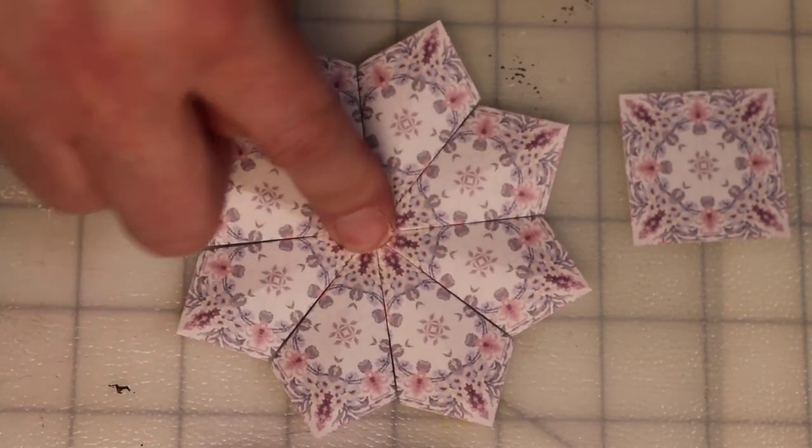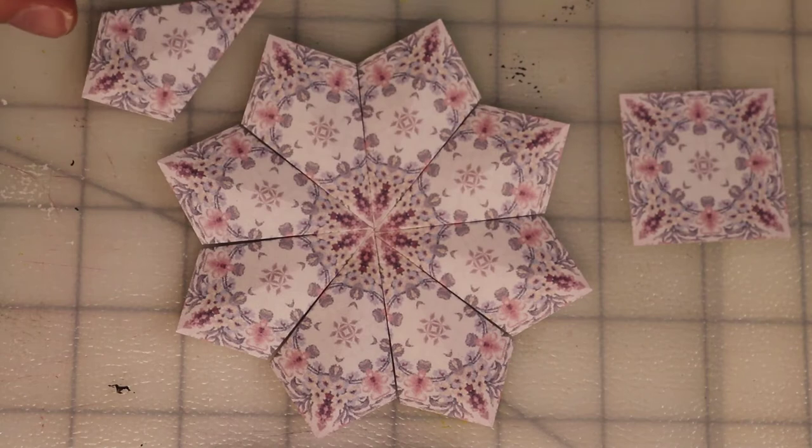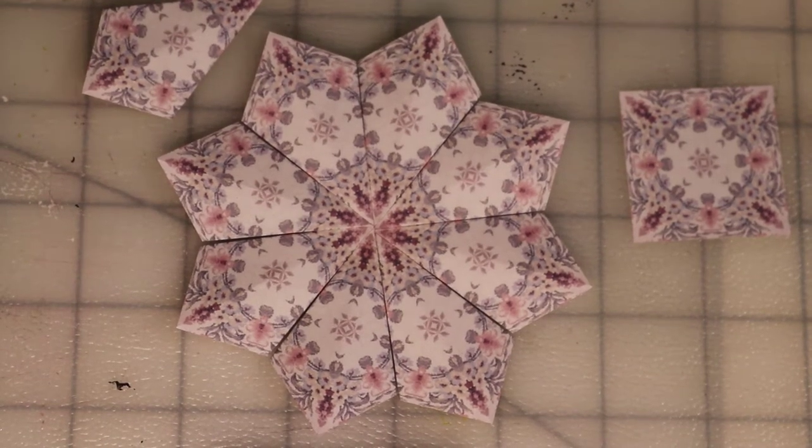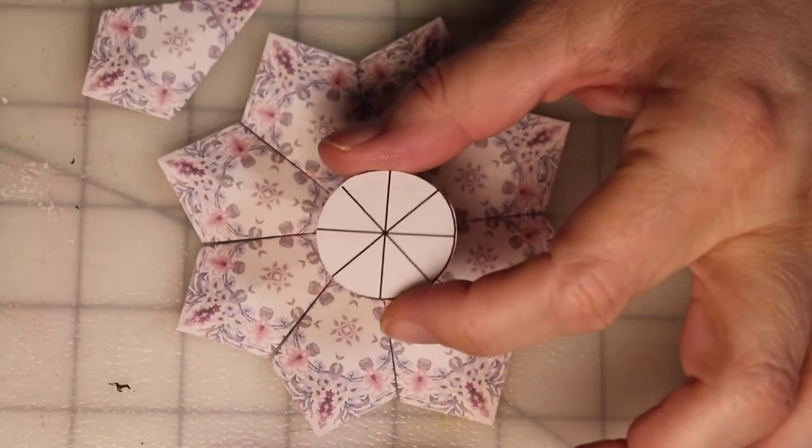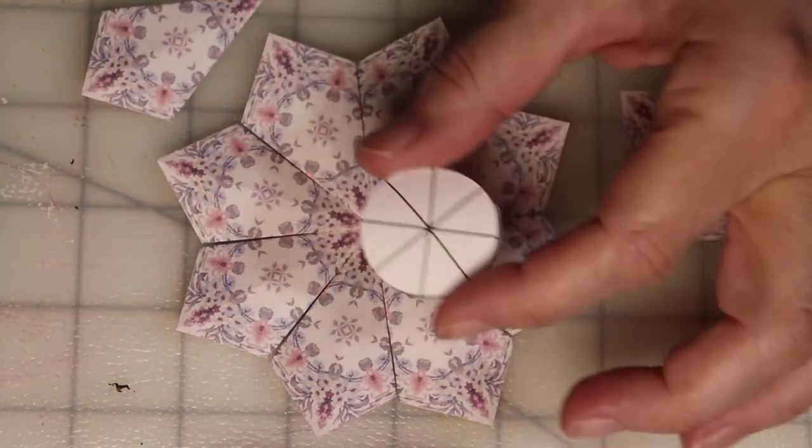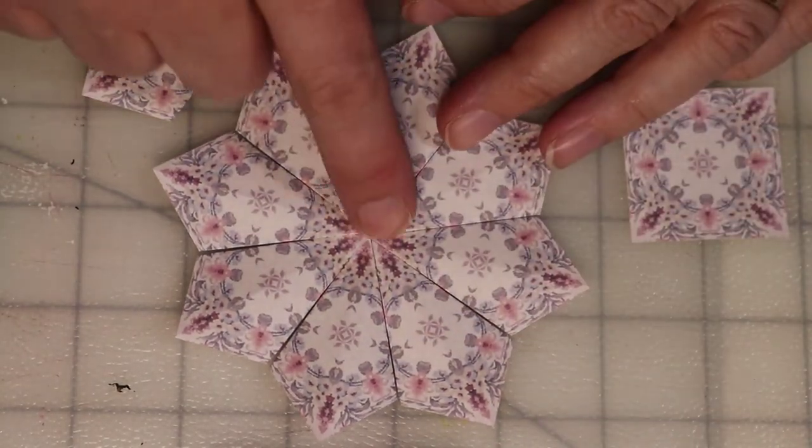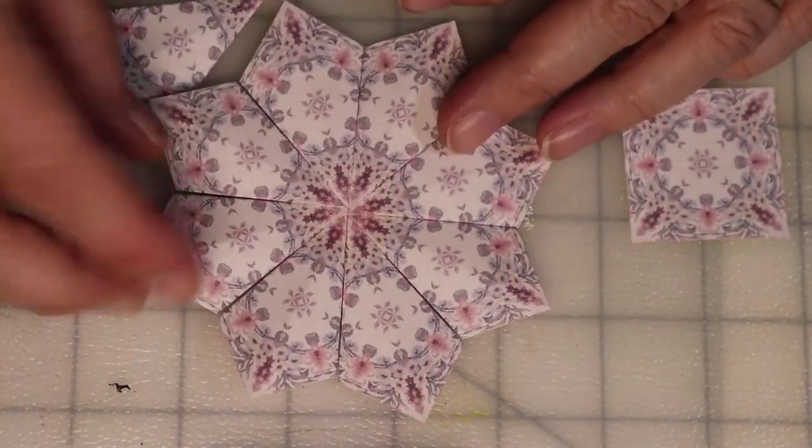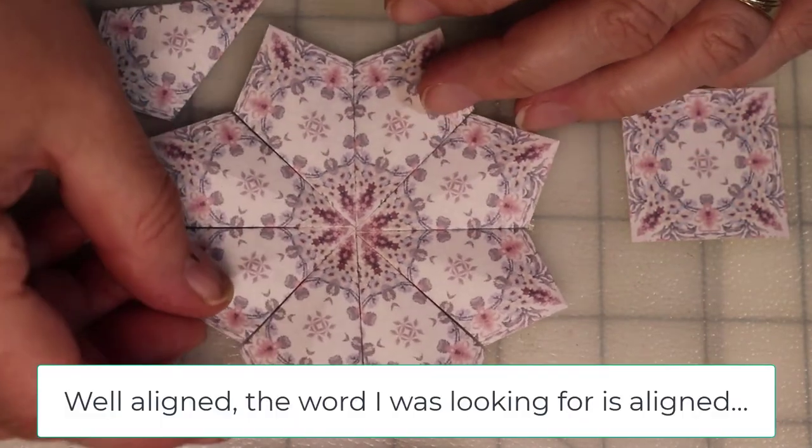And what I use to position these is what I call a positioning template. And all it is is a circle that's divided into eight equal sections. And what that does is that helps me get this center really well, all the points pointed in really well.